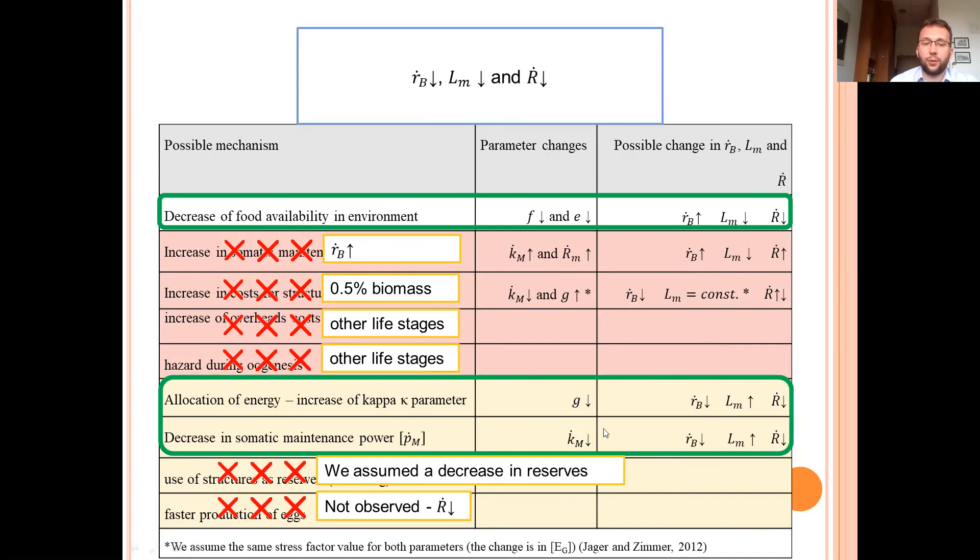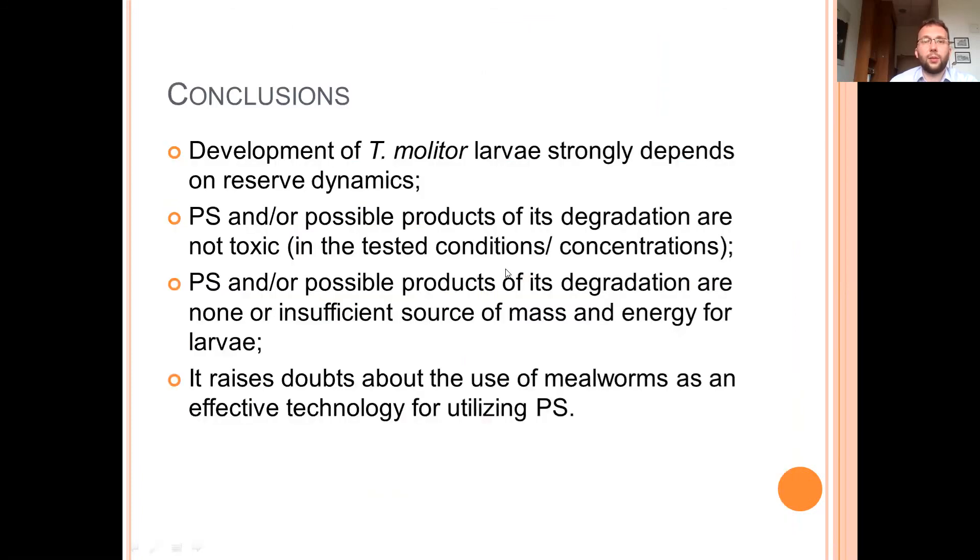So the main conclusions are that the development of Tenebrio molitor larvae strongly depends on reserves dynamics. And probably the transition to the next stage of development in conditions with an insufficient food supply strongly depends on the previously accumulated reserves and structures.